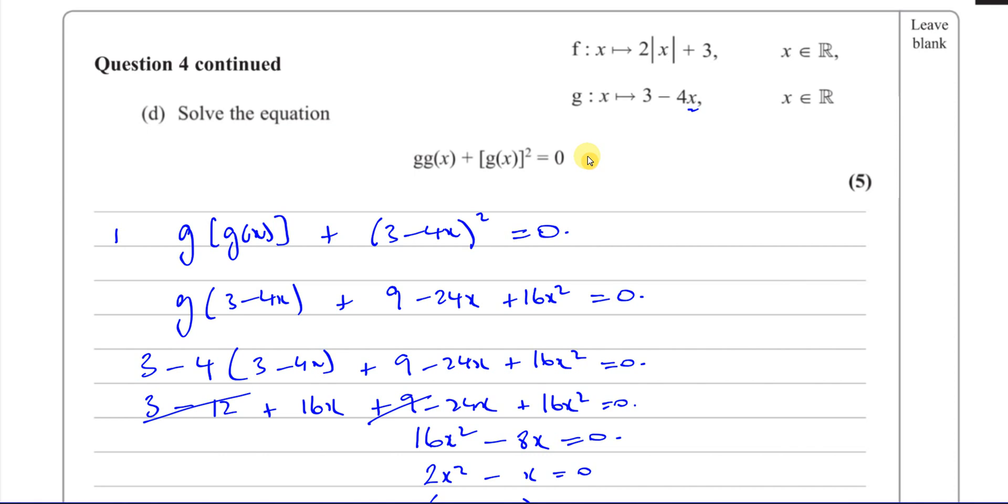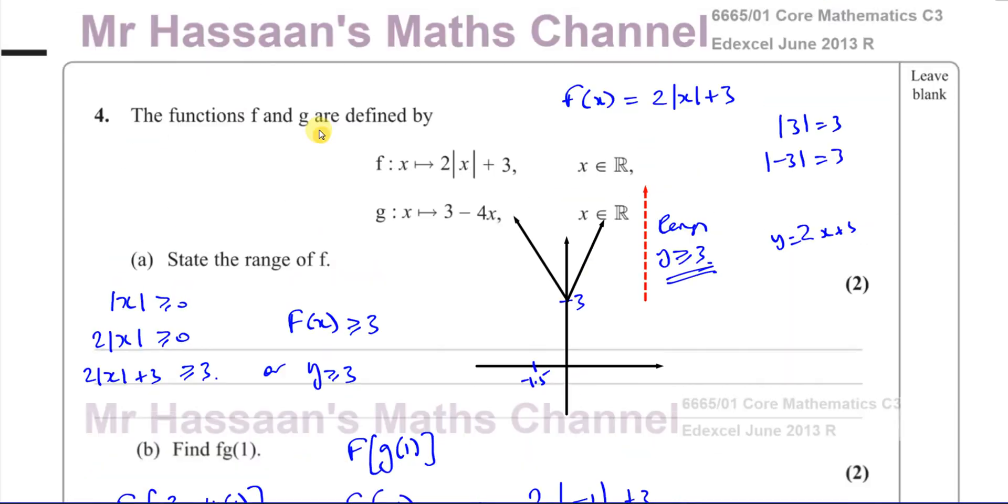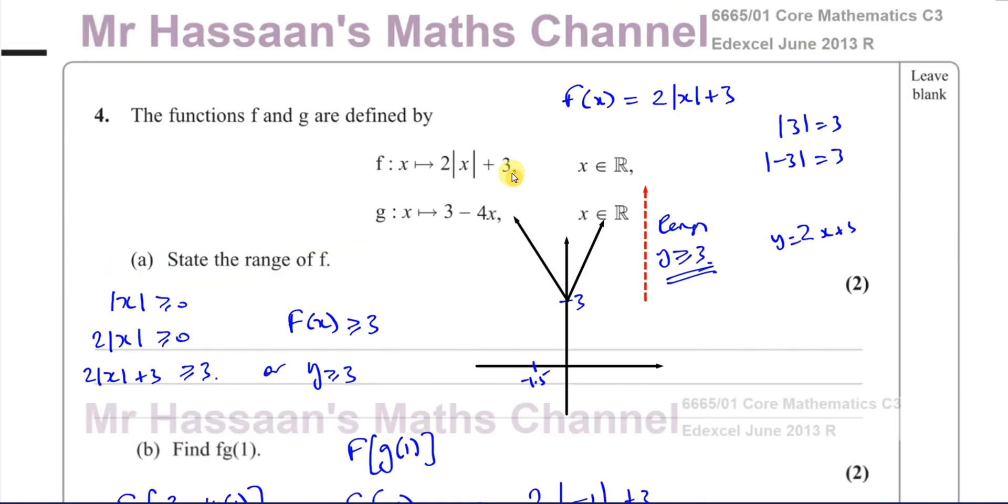So this question was pretty much a straightforward question. Not really too much complicated stuff in here. An easy, how many marks? 5 plus 2 plus 2 plus 5. 11 marks there for you. So I hope that you understood whatever you had issues with.